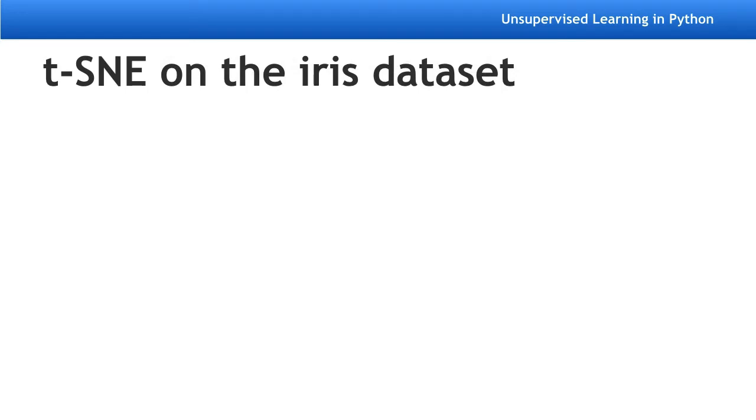To see what sorts of insights are possible with t-SNE, let's look at how it performs on the iris dataset. The iris samples are in a four-dimensional space, where each dimension corresponds to one of the four iris measurements, such as petal length and petal width.